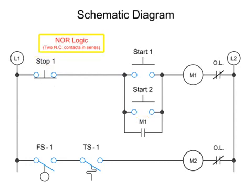NOR logic, an extension of NOT logic, operates by the inclusion of a second, normally closed push button in series. In this arrangement, pushing stop button 1 or stop button 2, the M1 coil is shut off and the M1 holding contact is deactivated.